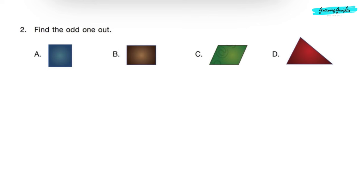Question 2: Find the odd one out. Except triangle, all other figures have four sides. So option D, triangle is the odd one out.